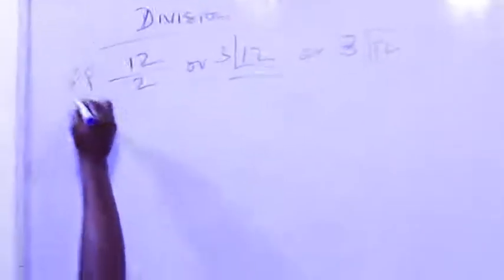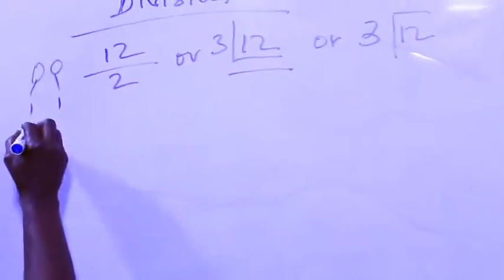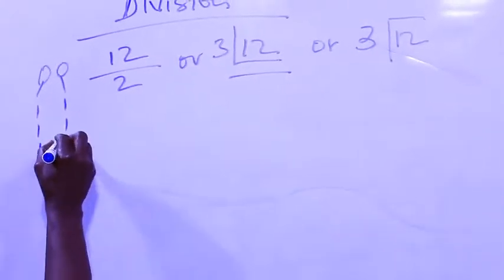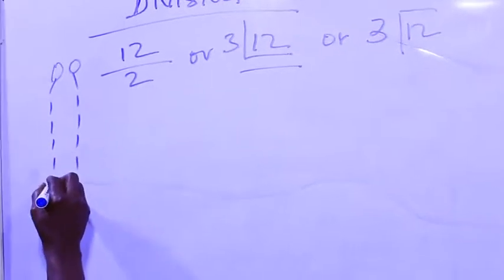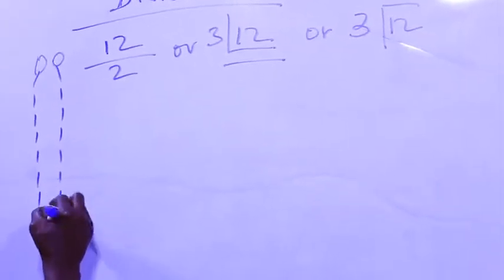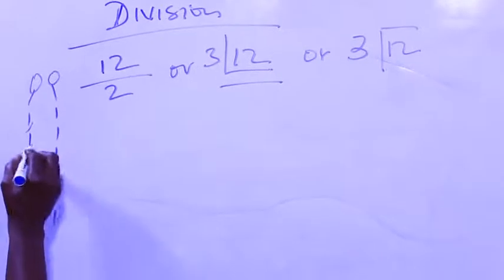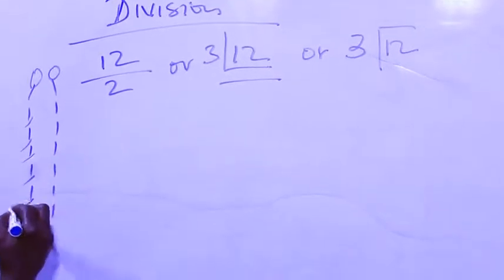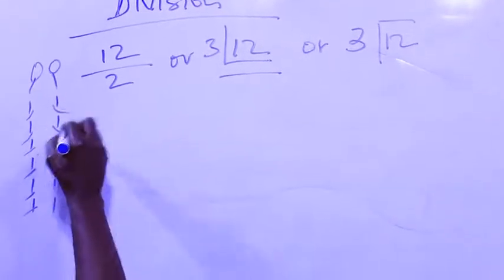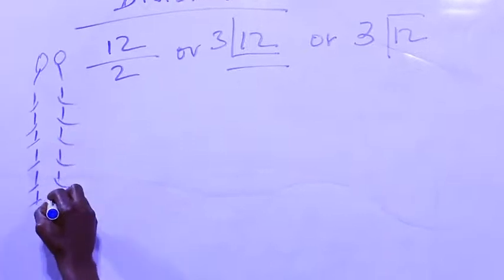Counting one through twelve items. When you share it together, count one person's share: one, two, three, four, five, six for each person.